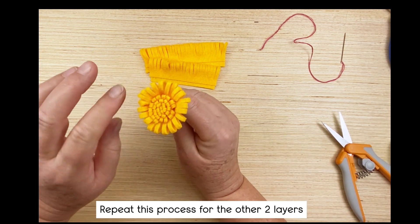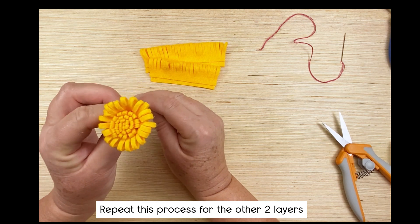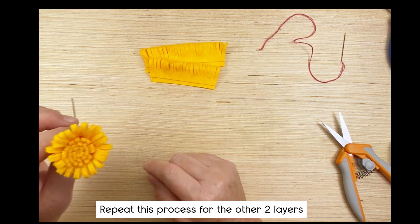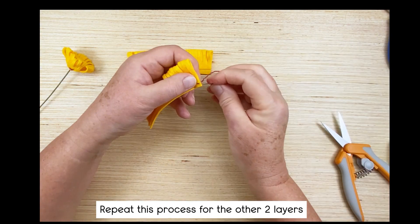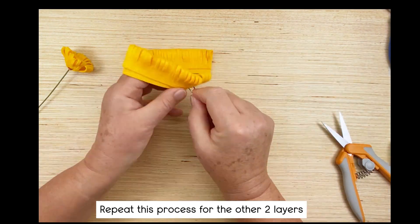That's the first layer done, we're going to repeat the process for the other two layers. Exactly the same method, running stitch and pull it into a circle shape.